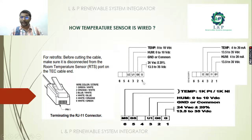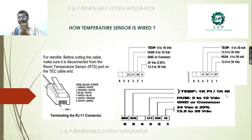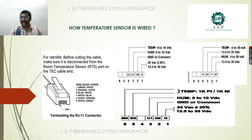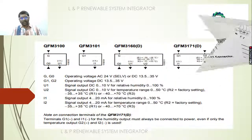You will also have terminals U1 and U2. If you want to sense the temperature as a voltage output, you connect one terminal to U2 and the other to ground. If you plan to monitor temperature as a current output (4 to 20 milliamps), then your connection should use terminals G1, I1, G2, and I2. In certain places you can also monitor temperature in terms of resistance, and provisions are available for that as well.